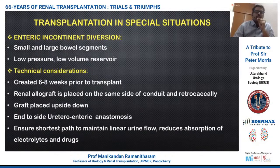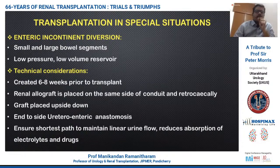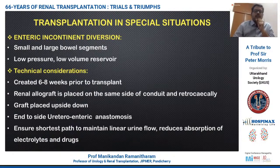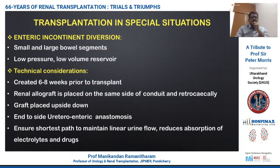For patients where the bladder is unsuitable for augmentation or ureteric implantation, enteric incontinent or continent diversions can be considered. Incontinent diversions are most commonly performed with a small bowel segment, or in some cases a large bowel segment. The goal is to create a low-pressure, low-volume reservoir. The conduit is created about 6-8 weeks prior to transplant, and the renal allograft can be placed on the same or opposite side.